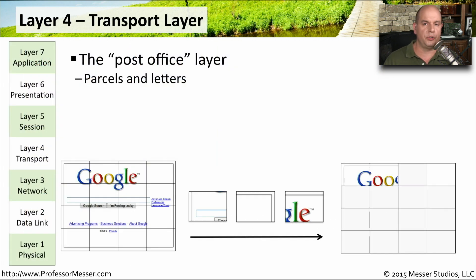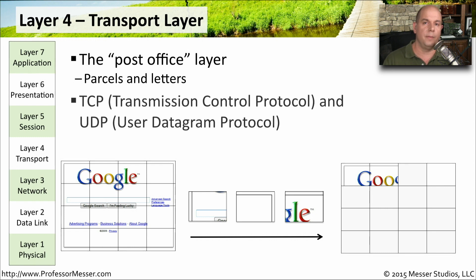Layer 4 of the OSI model is the transport layer, sometimes called the post office layer, because you're sending traffic to a specific device and a specific port number on that device — very similar to sending a letter to a specific post office box. We commonly refer to Transmission Control Protocol (TCP) and User Datagram Protocol (UDP) at layer 4 of the OSI model.